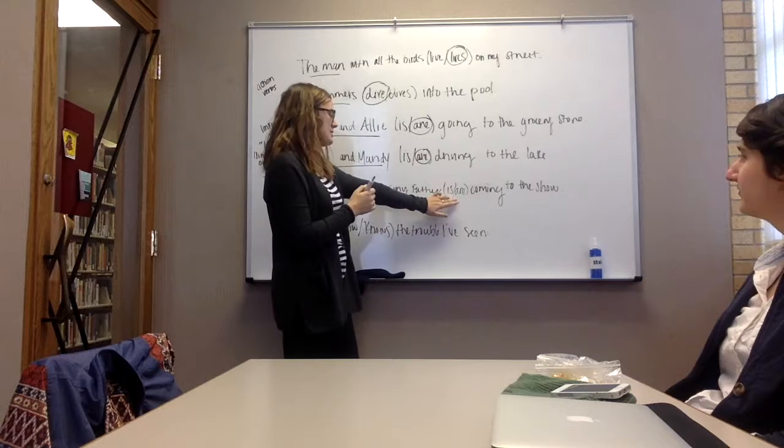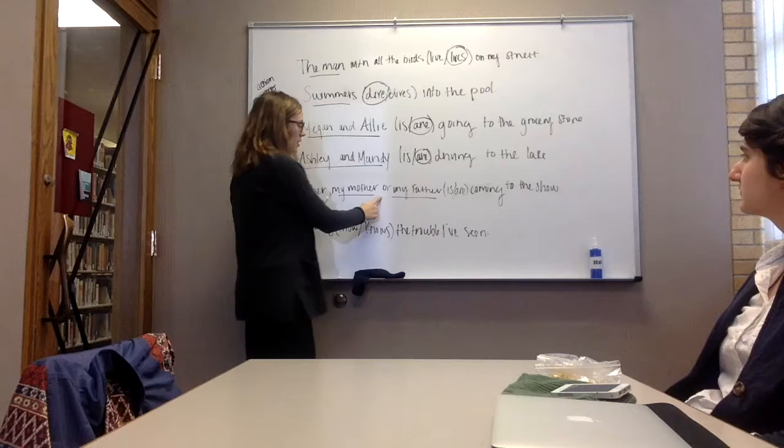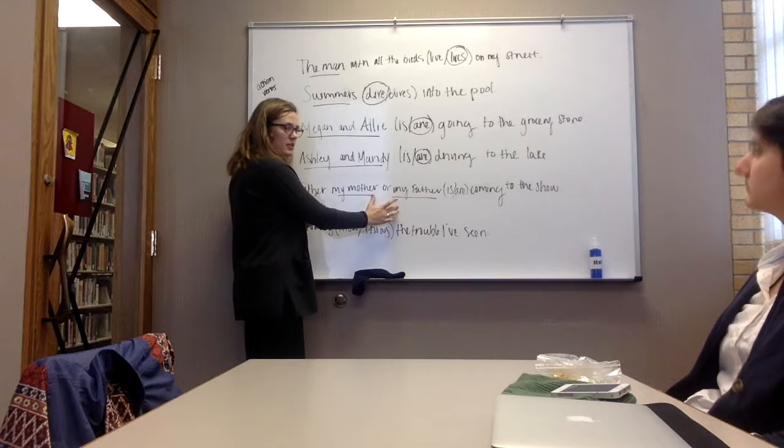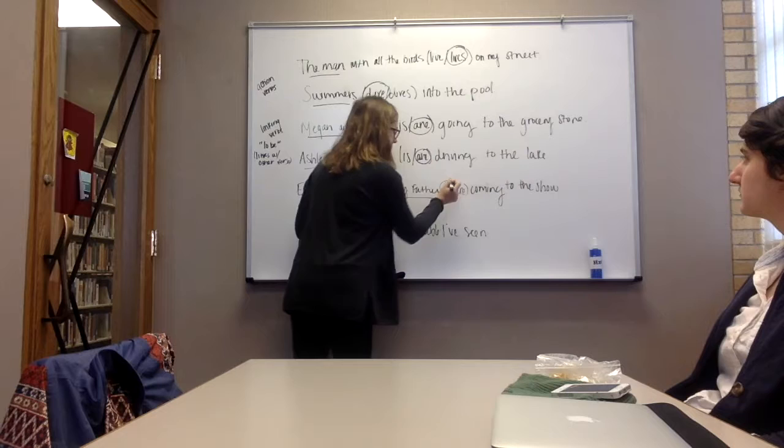So, in this instance, it would not be are, because we have or separating the two instead of and. And when it's or, you're choosing one or the other, so that makes it singular. So, in this case, the verb is is. Okay.